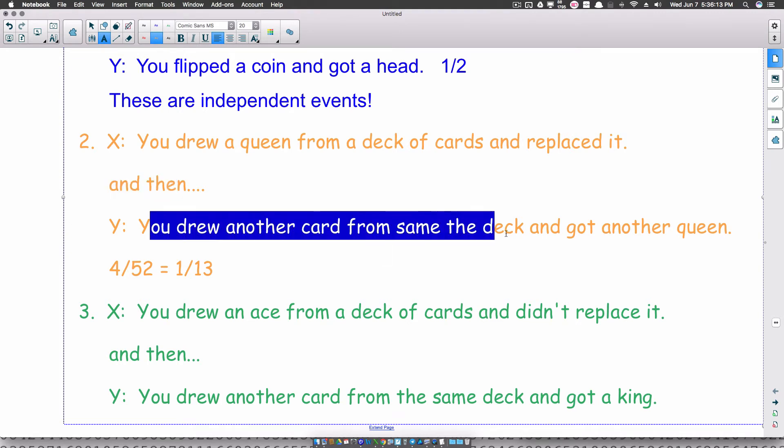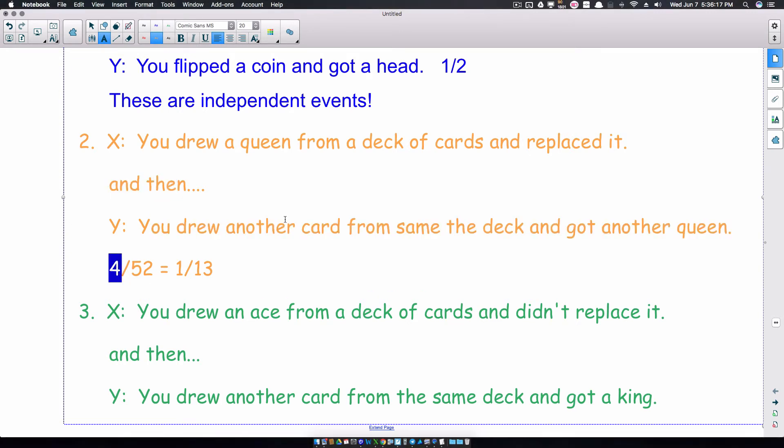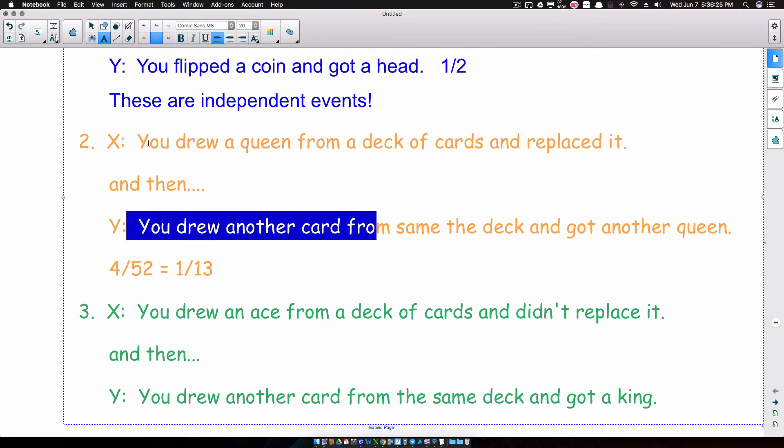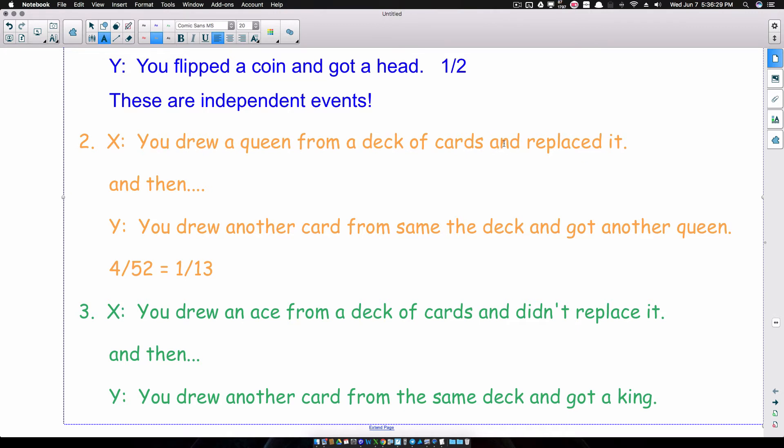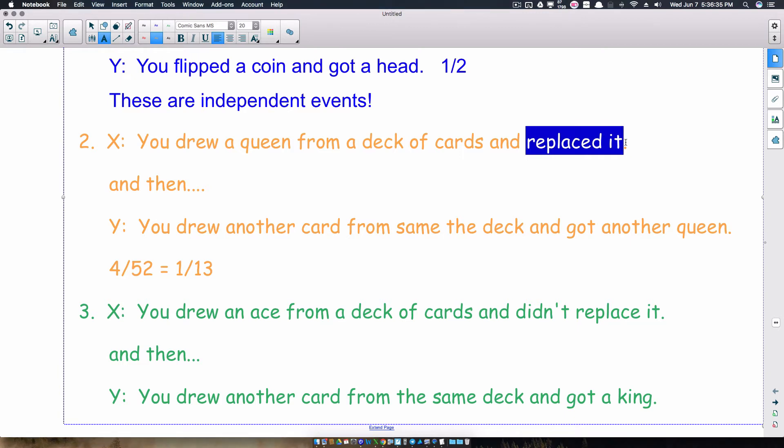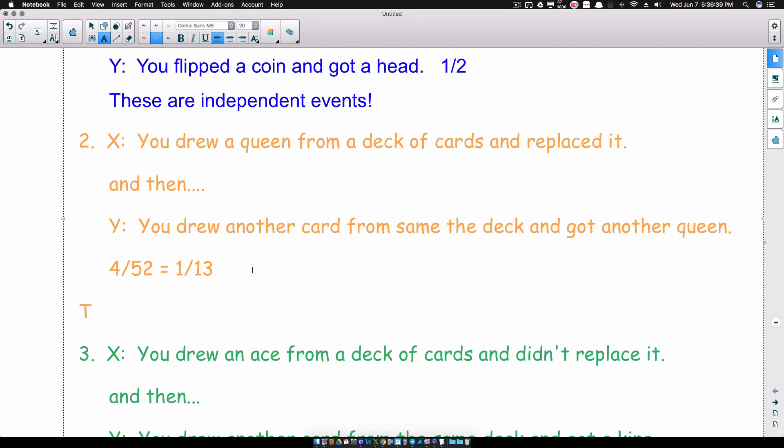And then you draw another card from the same deck and got another queen. Well, we still have 4 queens in that deck because we replaced this one up here. And we still got 52 cards in the deck. So, the outcome of this is not affected by this because we replaced that card. That's key right there. Understanding, you'll see this a lot in your probability and statistics courses. Where you replaced something. Essentially, what we're creating here are independent events.